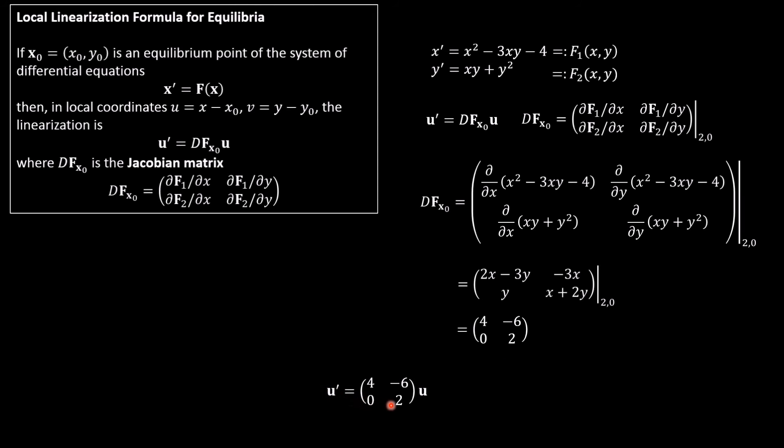So this is the linearization of our system at 2, 0. And so u prime equals 4, 0, negative 6, 2 times u. That is the linearization given by this formula. So the linearization of your nonlinear system is given by just finding the Jacobian matrix of your function f. Here's how you do it. And you end up with a matrix with numbers. So we're studying this equilibrium point, and we just found the linearization for it at that point.